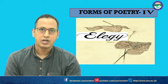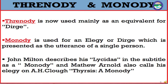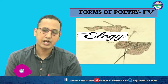Now come to another definition: threnody and monody. Threnody is used as a synonym for dirge — it can be treated equivalently. Monody is somewhat different; it is also a lamenting song but is used for an elegy or dirge presented as the utterance of a single person. The prefix 'mono' defines a single person. John Milton describes his 'Lycidas' in the subtitle as a monody; Matthew Arnold also calls his elegy 'Thyrsis' a monody. Monody is thus a part of elegy, not apart from it.